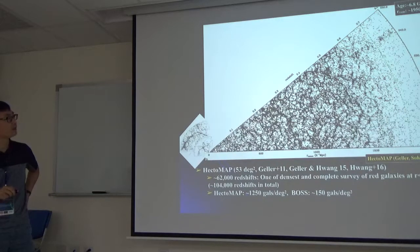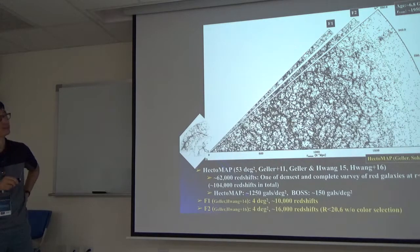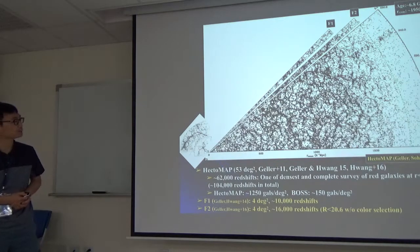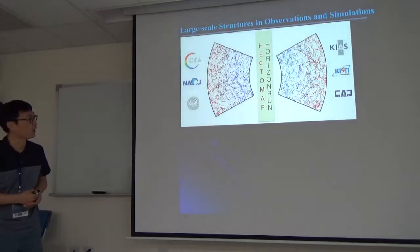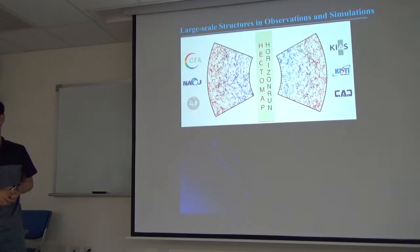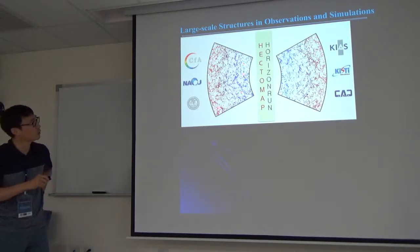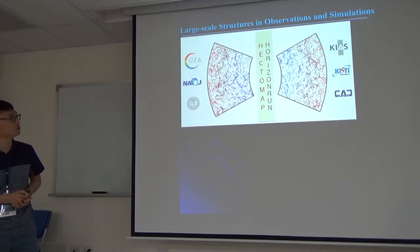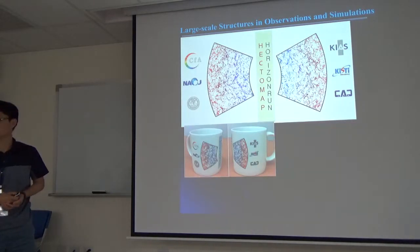There is another survey called FASTT FAIR2 to study large-scale structures. One of my jobs was to make a logo for the surveys. We are interested in comparing the largest scale structures between observations and simulations. One is a cone diagram from observation and the other one is from simulation to do a statistical comparison between the two. We even made mugs.